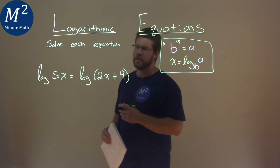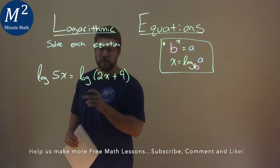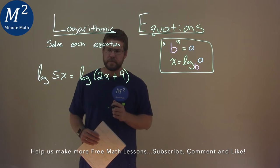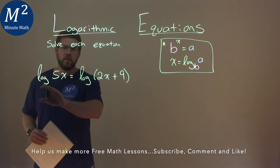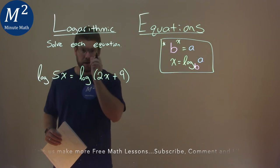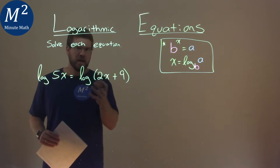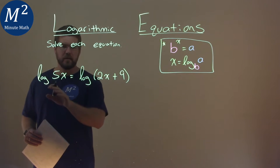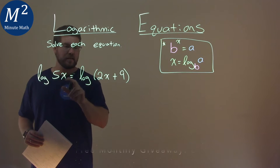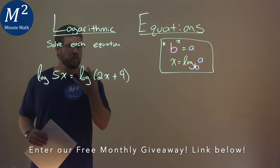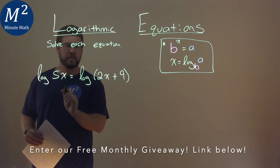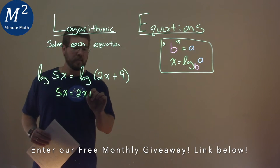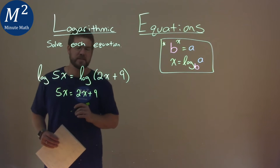We're given this problem right here: log of 5x equals log of 2x plus 9, and we need to solve the equation. We know we're taking the log — this is log base 10 — of two different expressions. When we have the same base, what we can do is set the inside parts equal to each other, so we can set 5x equal to 2x plus 9, and this becomes a much simpler problem.